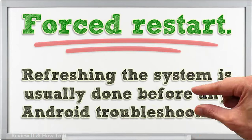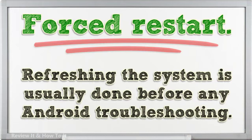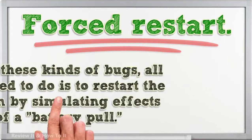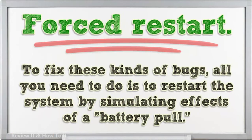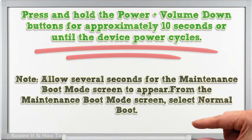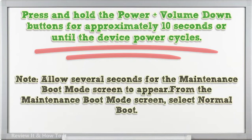Forced restart. Refreshing the system is usually done before any Android troubleshooting. Some network problems are due to temporary bugs. To fix these kinds of bugs, all you need to do is restart the system by simulating the effects of a battery pull. Press and hold the power plus volume down buttons for approximately 10 seconds or until the device power cycles. Allow several seconds for the maintenance boot mode screen to appear, then select normal boot.